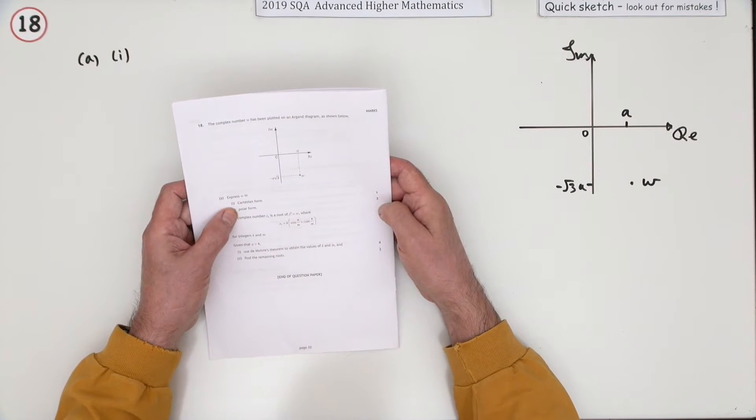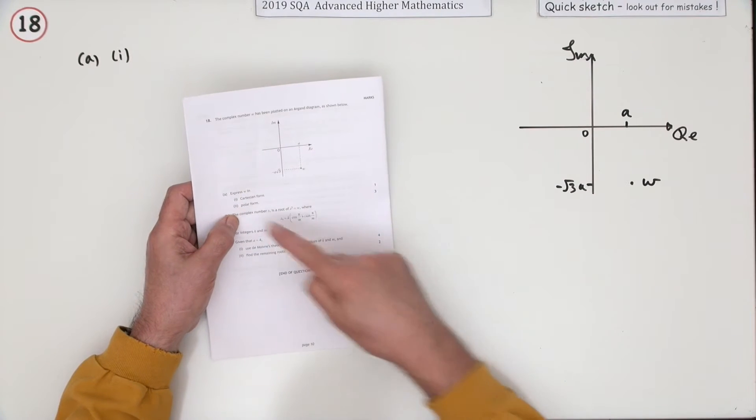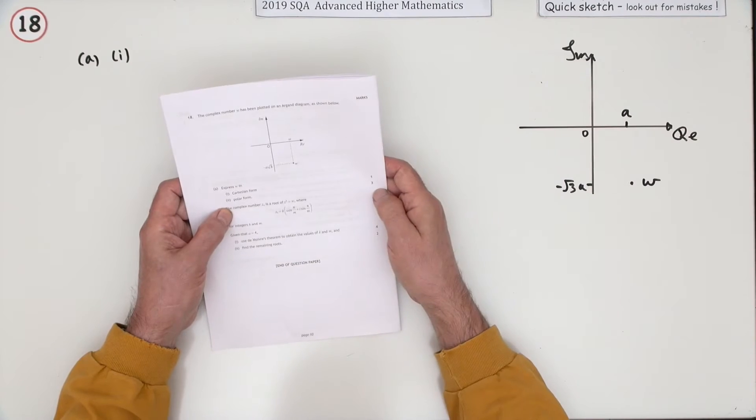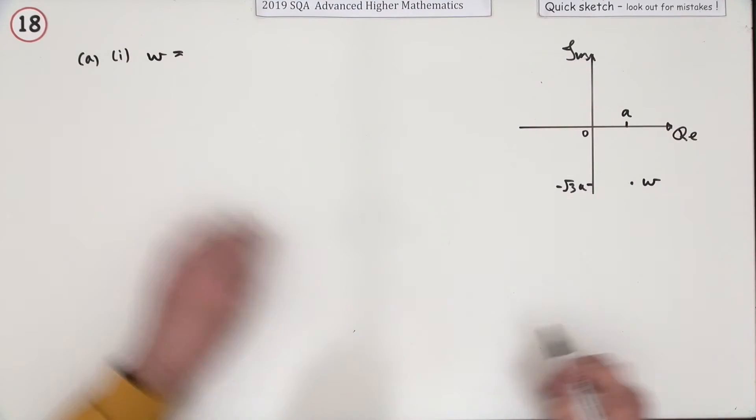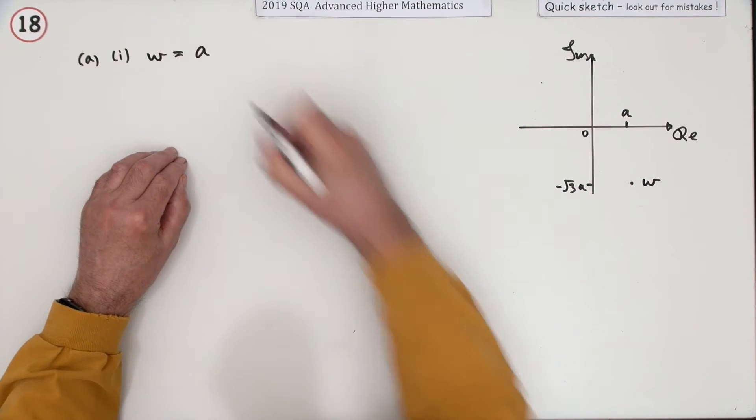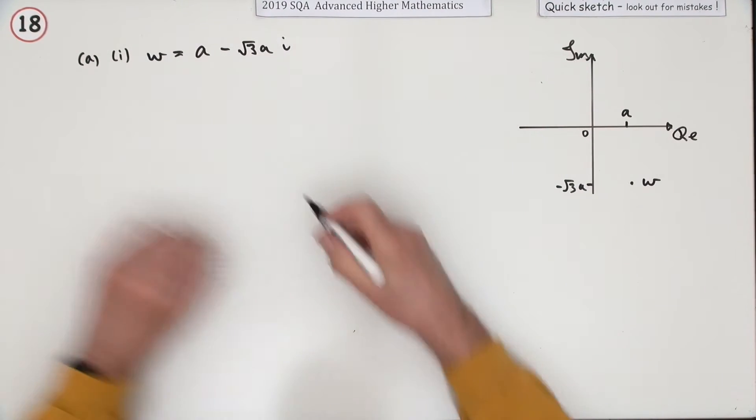First of all in Cartesian form, that's the rectangular form, and secondly in polar form, that's the angles and lengths. Well, immediately you've got it in Cartesian form because you've got the components: the real part is a, the imaginary part is negative root 3a, so that times i.